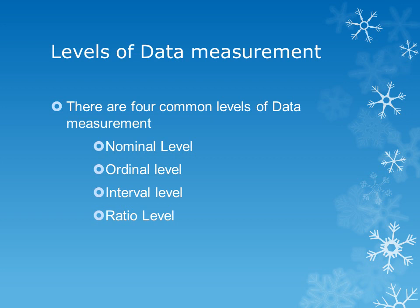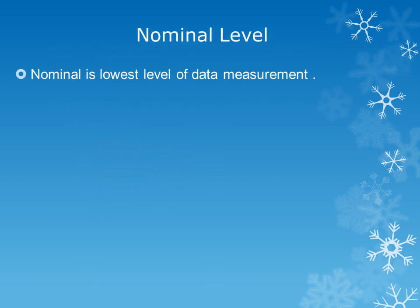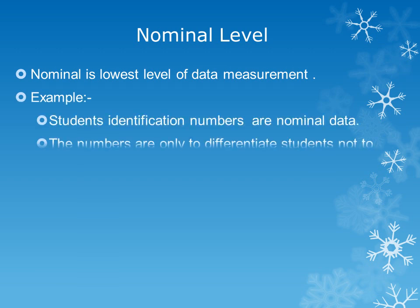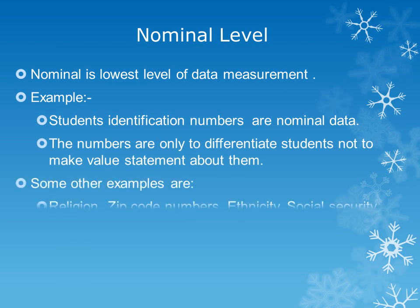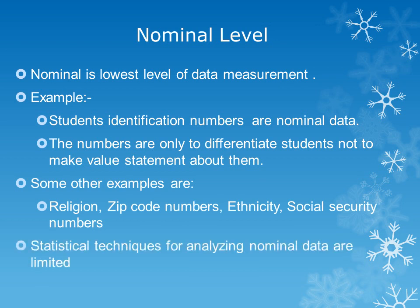Nominal level is the lowest level of data measurement. An example is student identification numbers, which are at the nominal level because those numbers don't have any value — they are just used to differentiate students. Some other examples are religion, zip code numbers, ethnicity, and social security numbers. Statistical techniques for analyzing nominal level data are limited.